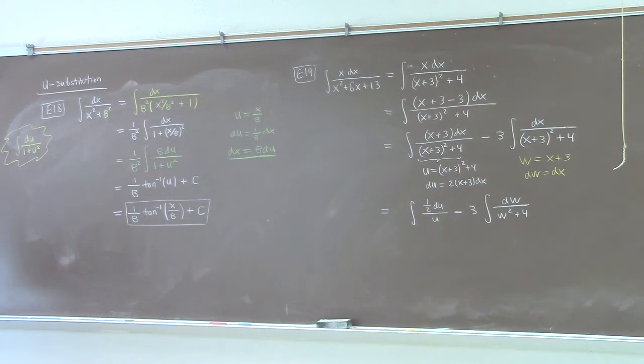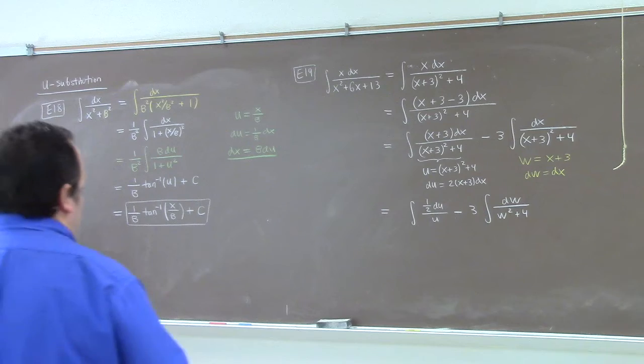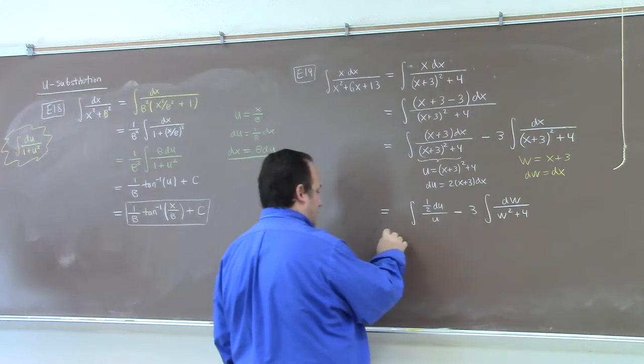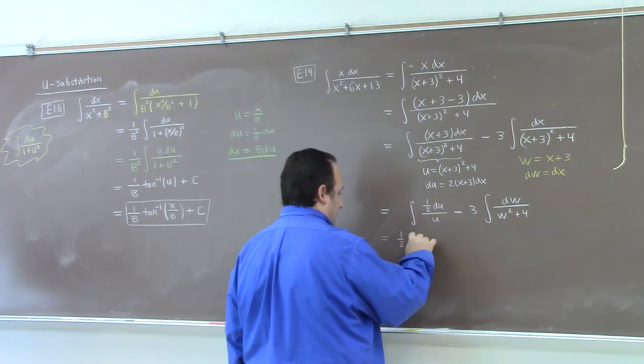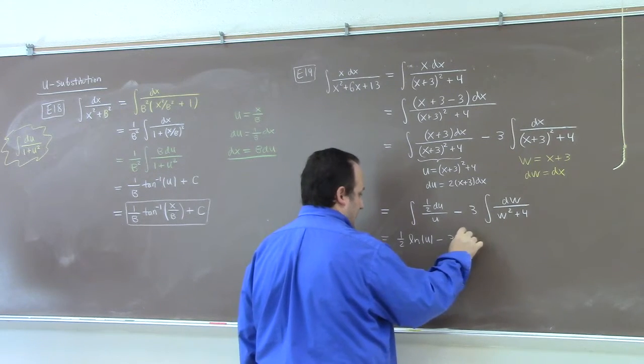And the first one's a log, right? Just so we get 1 half natural log absolute value of u minus 3.